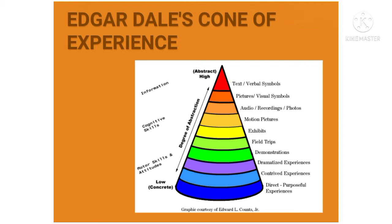Dale's Cone of Experience is a visual model composed of 11 stages starting from concrete experiences at the bottom of the cone, becoming more and more abstract as it reaches the peak. According to Dale, the arrangement in the cone is not based on difficulty but rather based on abstraction and on the number of senses involved.